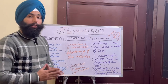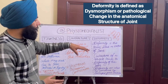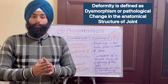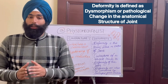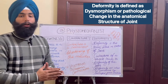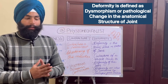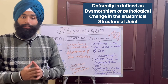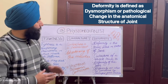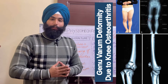Talking about Deformity — what is Deformity? Deformity is the term used in context to joints; the joints get deformed. There is dysmorphism of the joint, which can occur either due to contracture of the muscles or due to damage to the joint structures like ligaments, menisci, cartilages, etc. The example of a Deformity is Genu Varum Deformity in Knee Osteoarthritis.